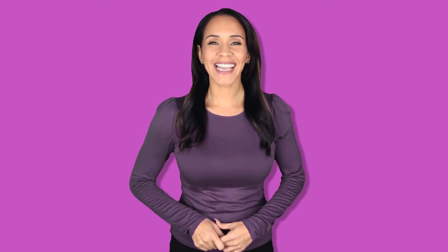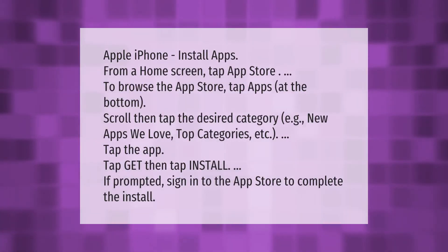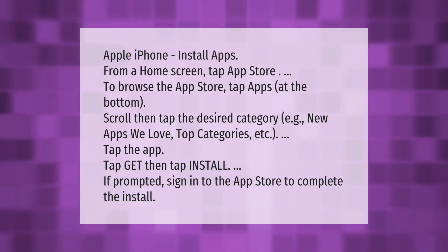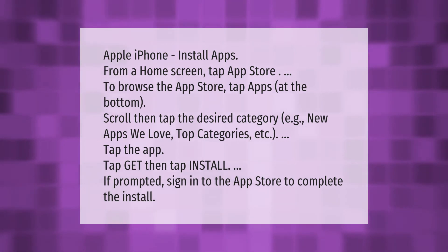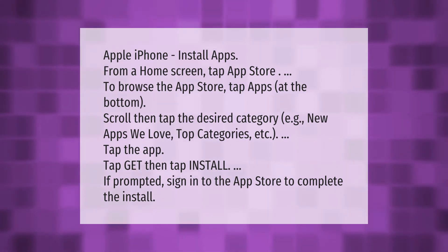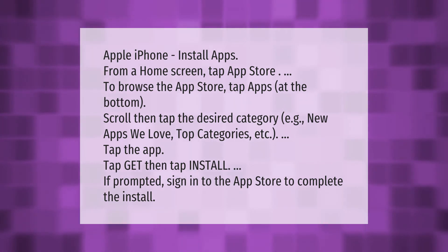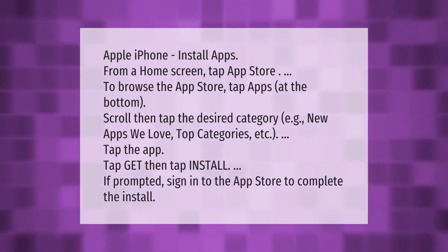To install apps on an Apple iPhone from the Home Screen: tap App Store to browse. Tap Apps at the bottom, scroll, then tap the desired category, such as New Apps We Love or Top Categories. Tap the app, tap Get, then tap Install. If prompted, sign into the App Store to complete the install.